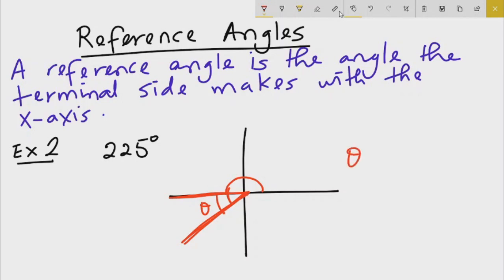In this case, our angle theta is 225 minus 180 degrees. We know that this line is 180 degrees, but our angle of 225 went above 180. So the reference angle is 45 degrees.